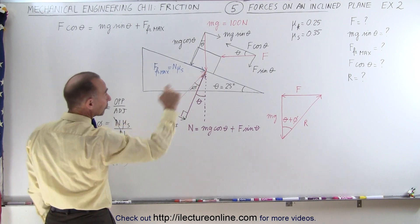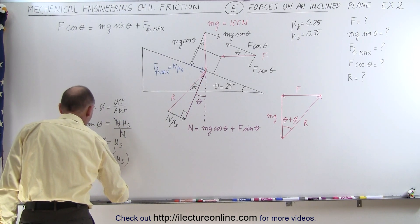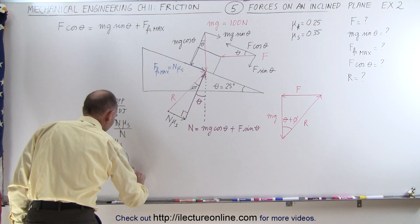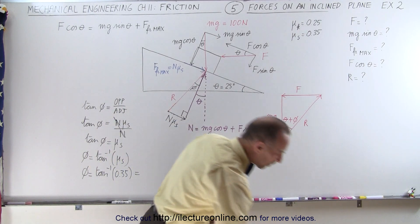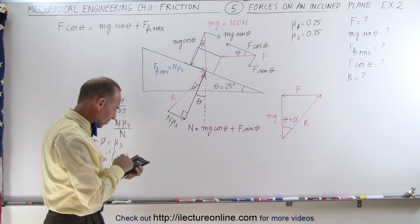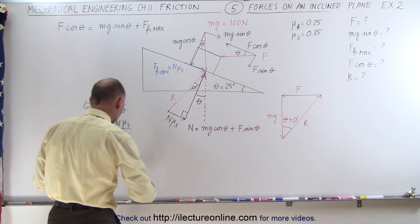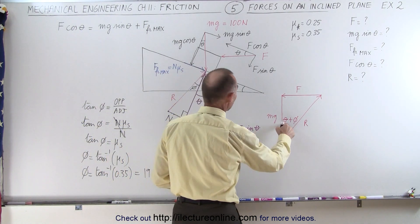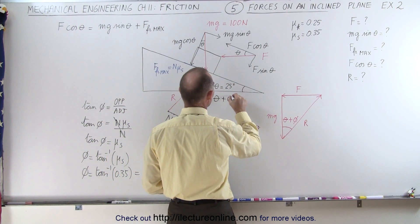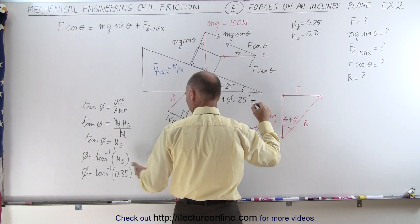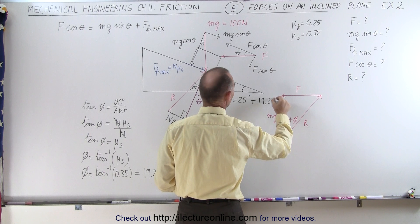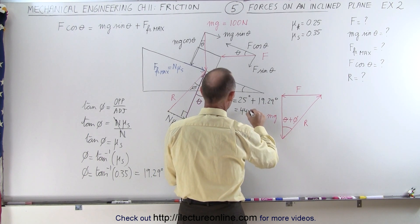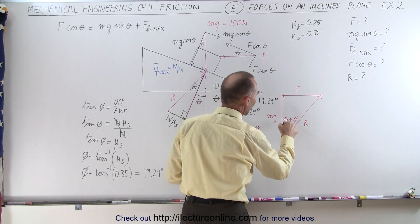We know that the static coefficient of friction is 0.35, which means the angle phi is equal to the arc tangent of 0.35, which is 19.29 degrees. Now that we know that, since theta is 25 degrees, theta plus phi is going to be 25 degrees plus another 19.29 degrees, which is 44.29 degrees. So now we understand what this total angle is.